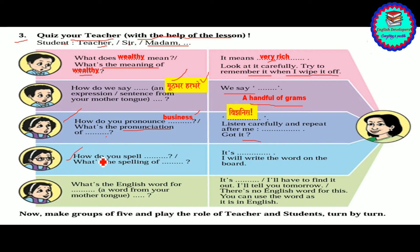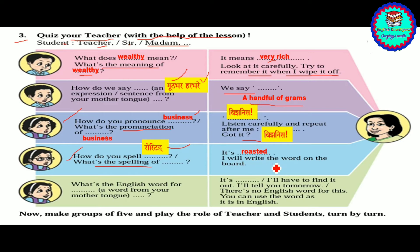How do you spell 'roasted'? It is R-O-A-S-T-E-D. What is the English word for a word from your mother tongue? It is 'labour'. Make a group of five and play the role of teacher and students, turn by turn.